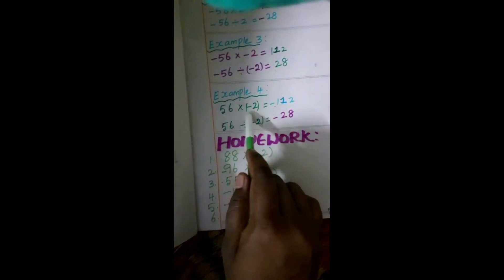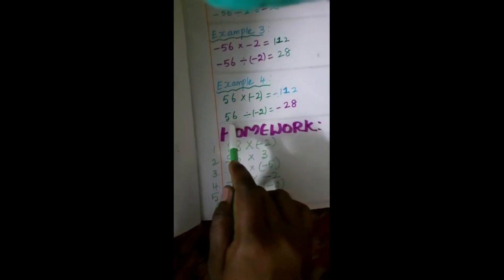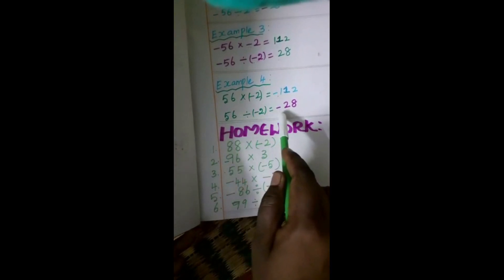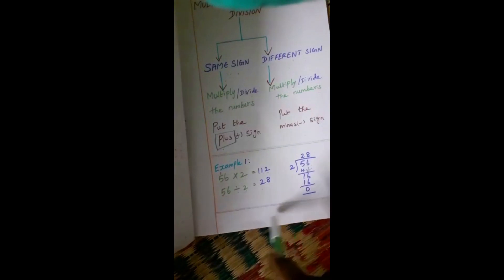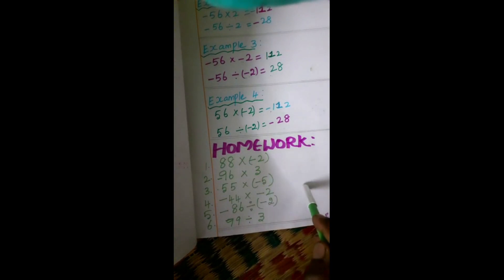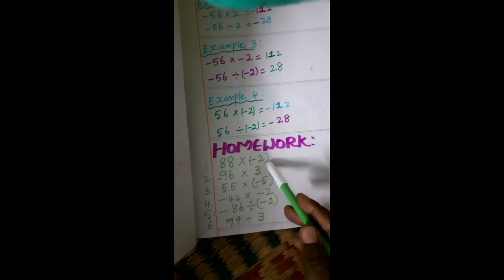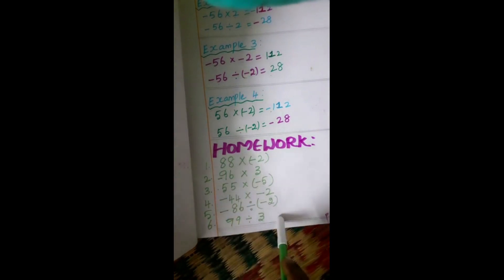Example 4: 56 times minus 2 — different sign, so you put minus. 56 divided by minus 2 — different sign, so you put minus. Remember: if the signs are the same, put plus; if the signs are different, put minus; then multiply or divide normally. This is the homework for multiplication and division — sign clarification sums using easy tables. You will put the correct sign and complete in your notebook.